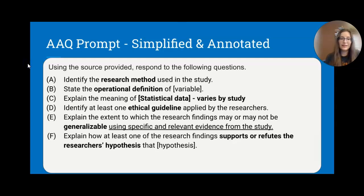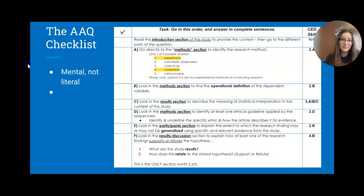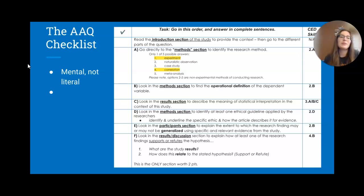In simplified terms: A is research methods, B is operational definitions, C is statistical data, D is ethics, E is generalizability, and F is drawing conclusions on whether findings support or refute the hypothesis. Think of this as a mental checklist. It helps you know where to look in the AAQ prompt — you'll often find key information in the method section, results section, and participant section, the three main parts you'll see.